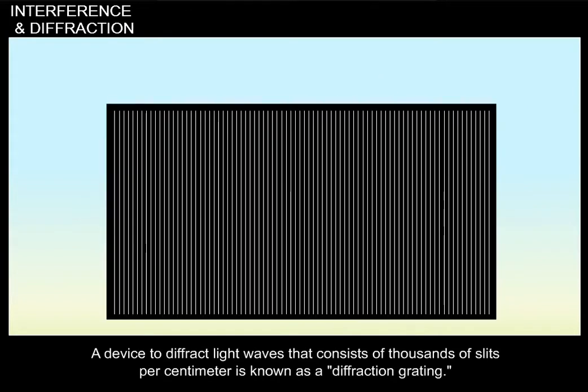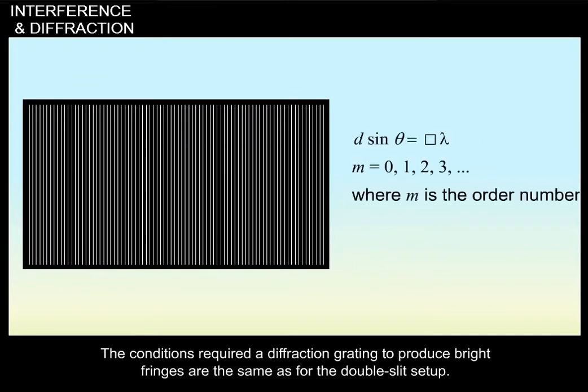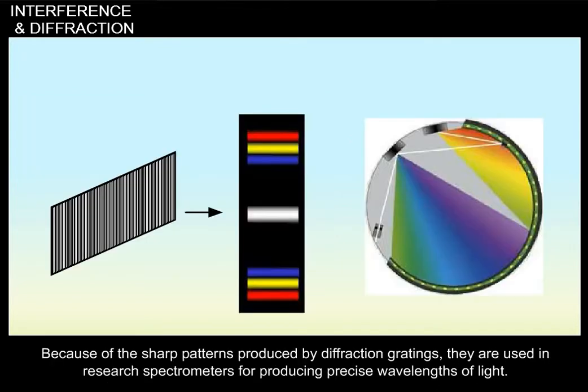A device to diffract light waves that consists of thousands of slits per centimeter is known as a diffraction grating. The conditions required for a diffraction grating to produce bright fringes are the same as for the double slit setup. Because of the sharp patterns produced by diffraction gratings, they are used in research spectrometers for producing precise wavelengths of light.